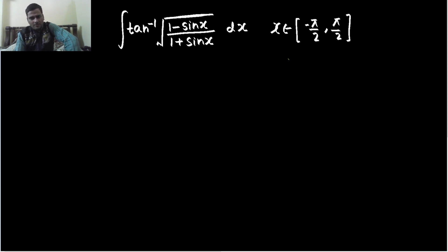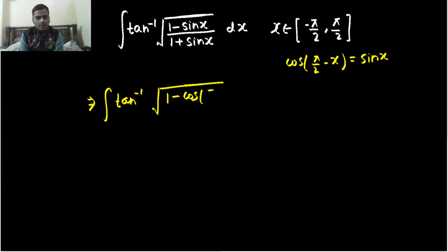We already know that we can change sine in terms of cosine because cos(π/2 - x) is sine x. So let's do that so we are able to use the formulas. So tan inverse, this root is inside tan inverse. So tan inverse 1 minus cos(π/2 - x) over 1 plus cos(π/2 - x).